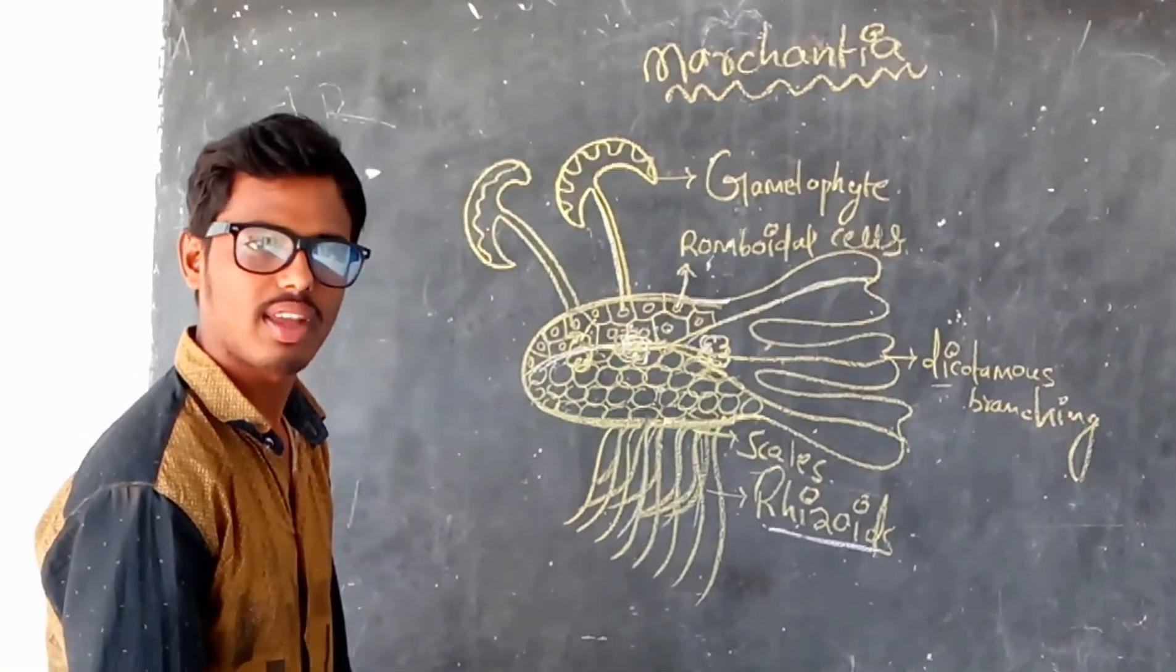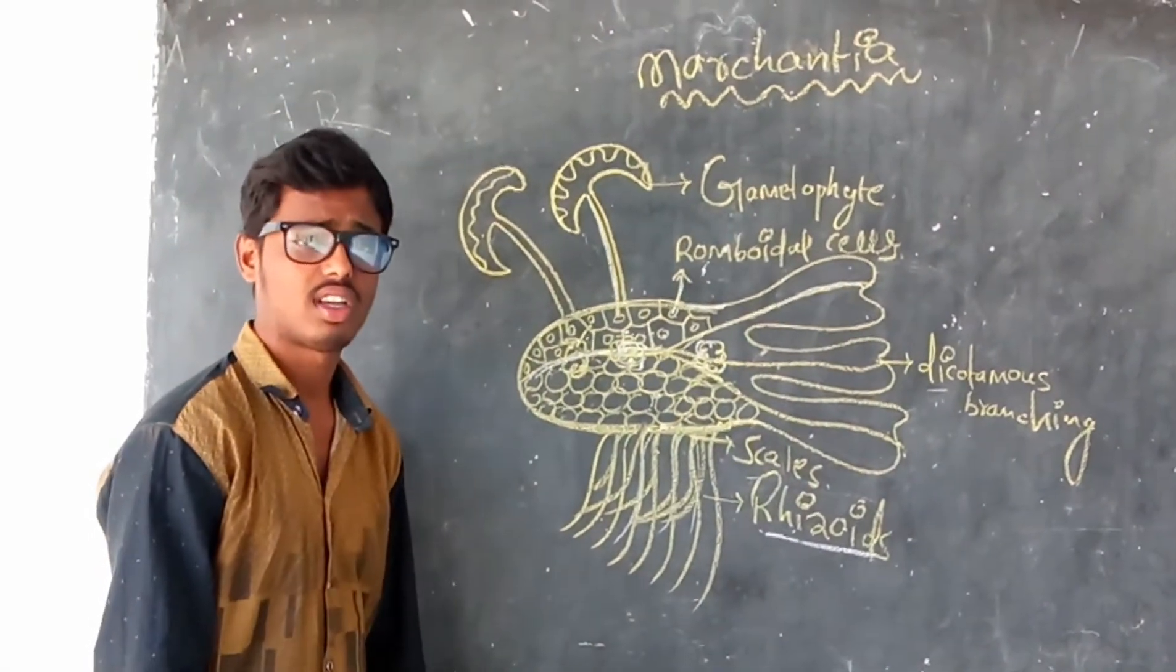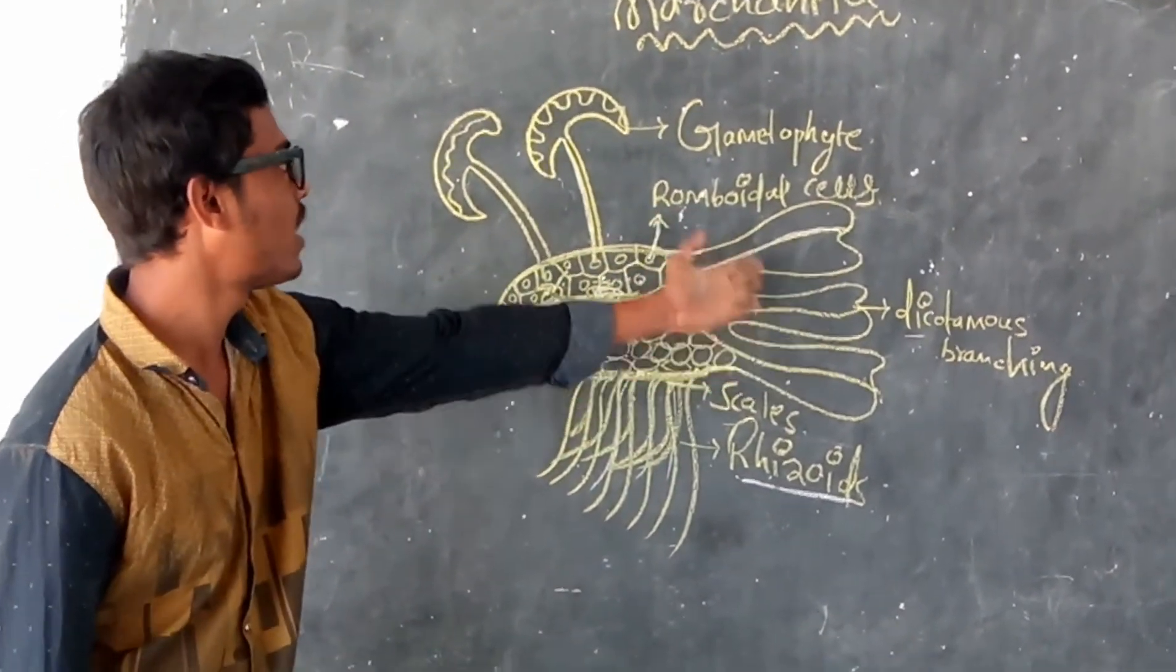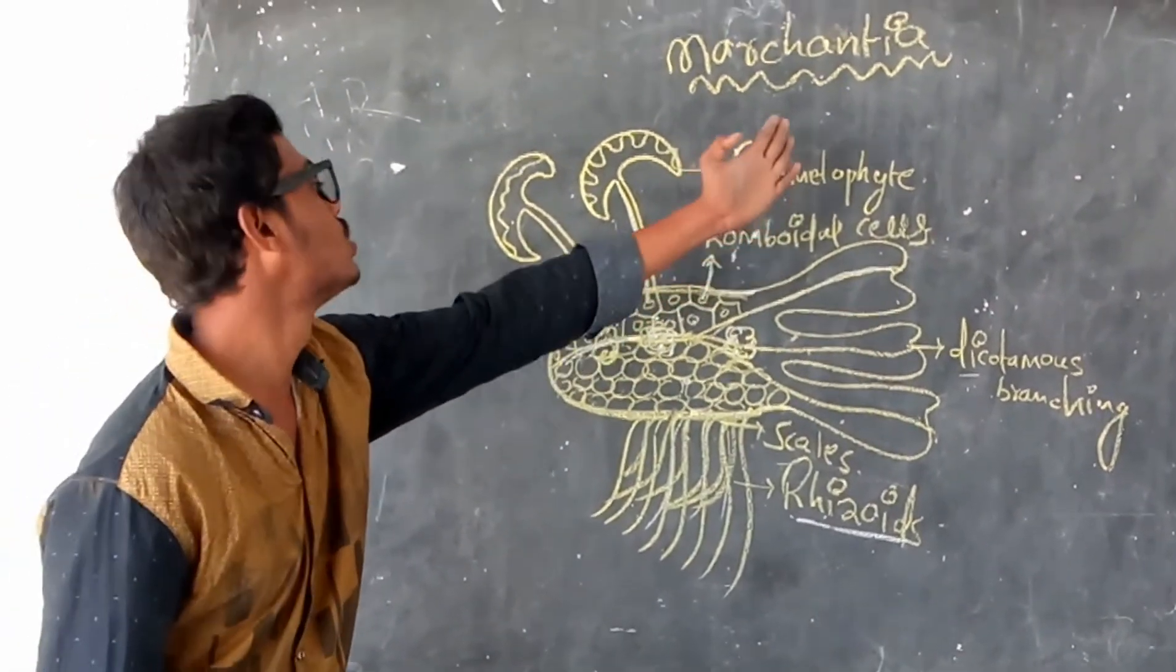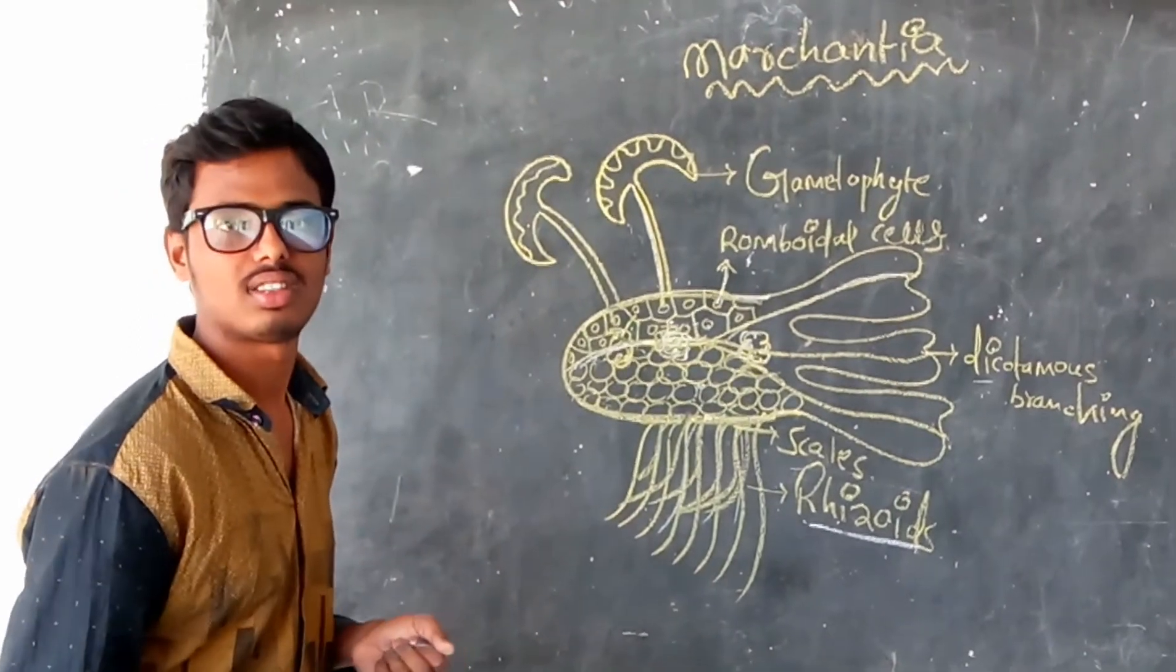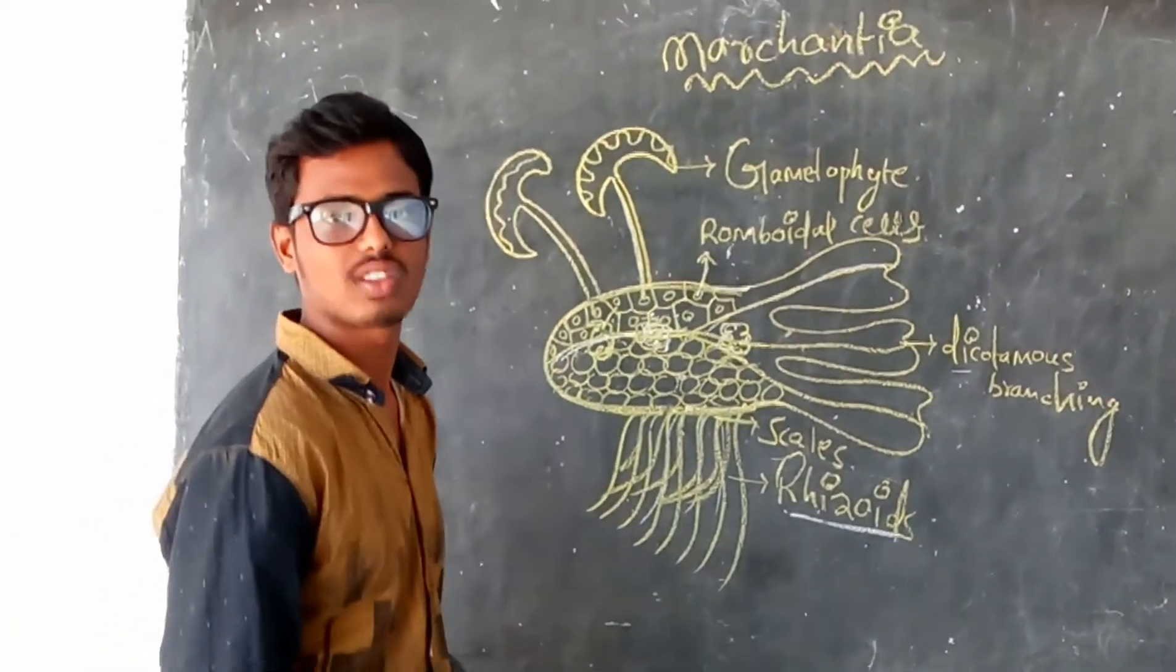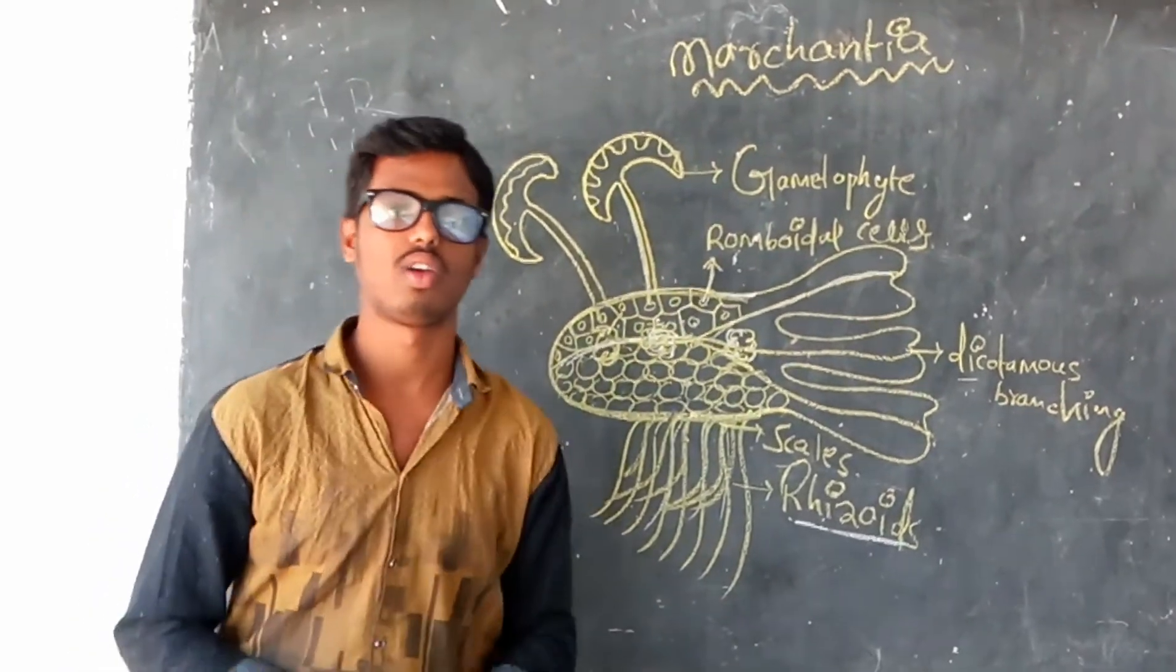Our lesson explained Marchantia. What we observed: the dorsal part and ventral part. Dorsal has rhomboidal structures, dichotomous branching, and gametophytes, which are most important. Gametophytes are the main reproductive organs present on the surface of the thallus. Today your lesson is completed.